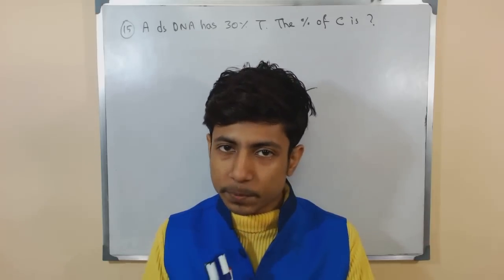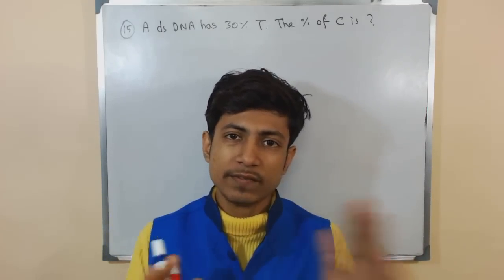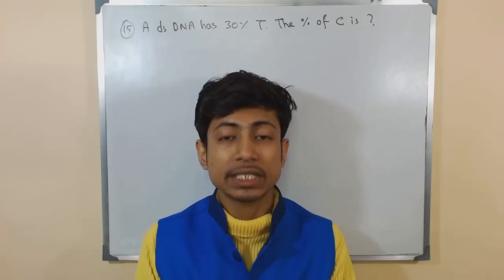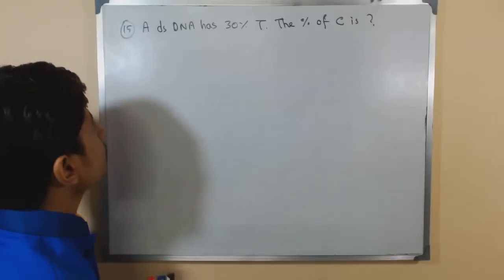That's called Watson-Crick base pairing, and also according to Chargaff's ratio, there is the ratio and percentage of adenine and thymine and guanine and cytosine that is present in a cell. So let's talk about this question again.